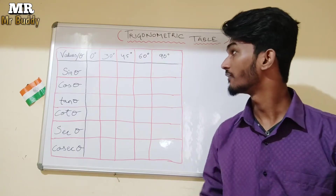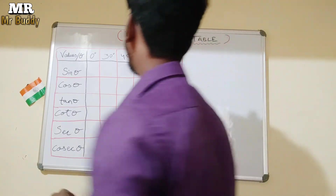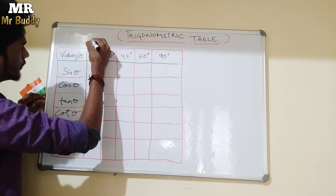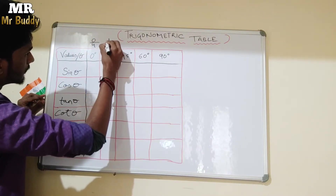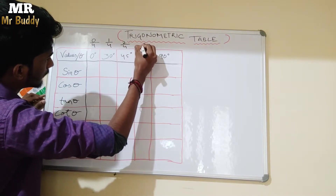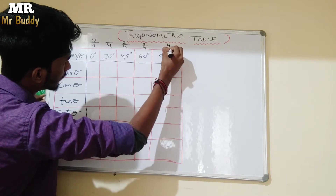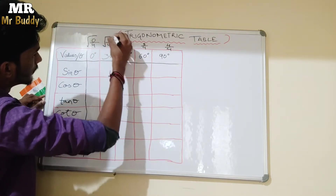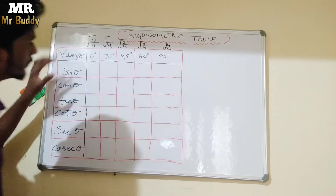First, we have to assign the positions. This is 0 divided by 4, this is 1 divided by 4, this is 2 divided by 4, this is 3 divided by 4, and 4 divided by 4. Now let's calculate the under root values.